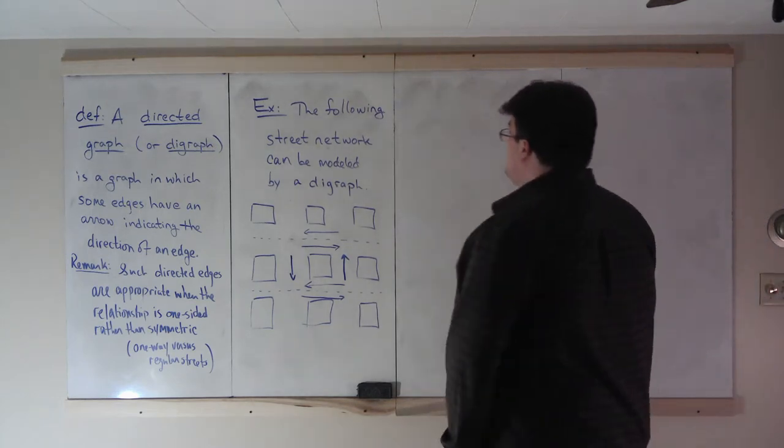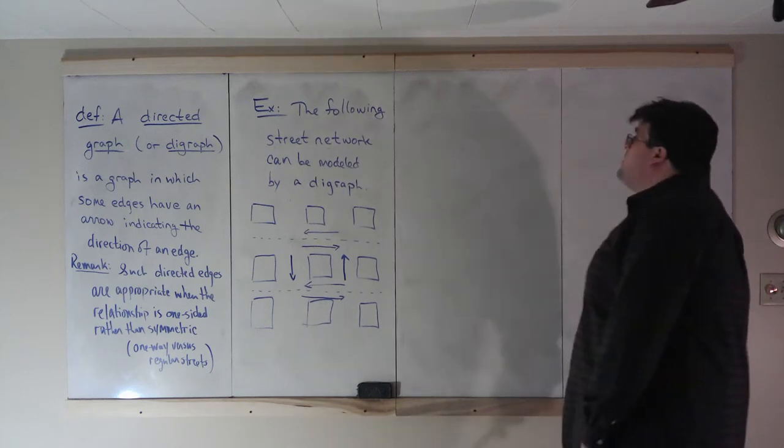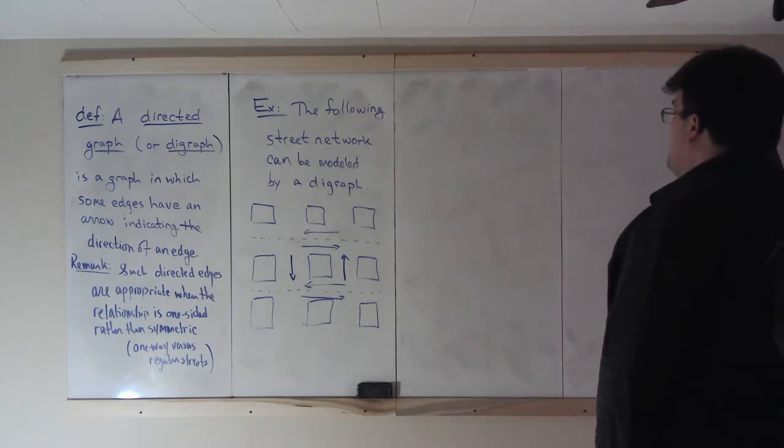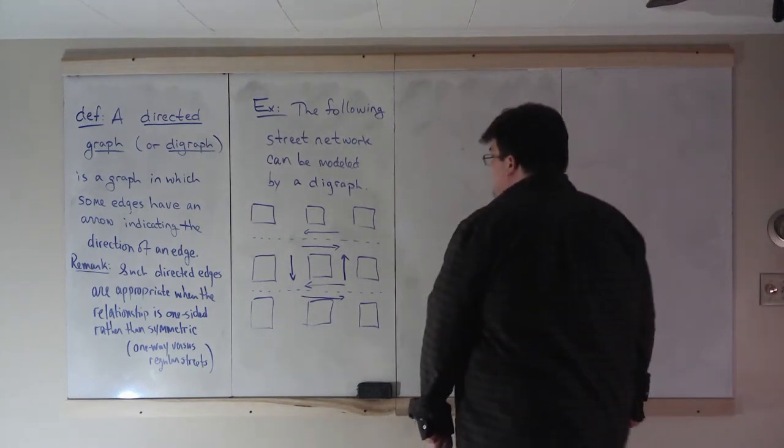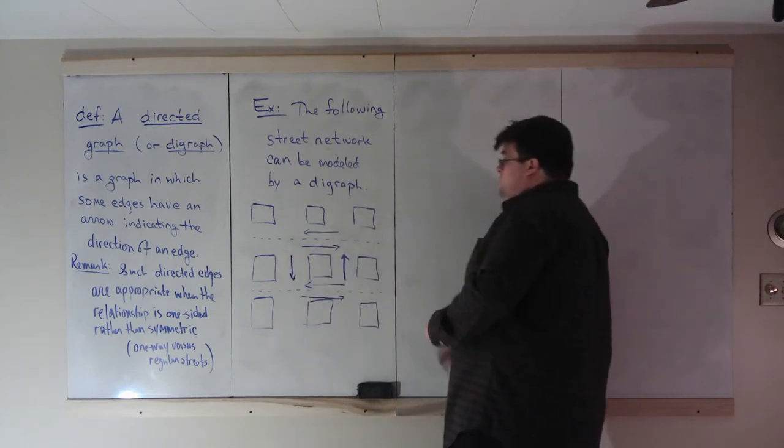And we're just going to... Well, I guess I'm going to do this first and then I'll say what I was about to say. So let's look at this example. The following street network can be modeled by a digraph. So here we have a bunch of building-type things. And here we're just going to look at this middle portion of this street network.